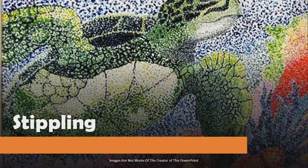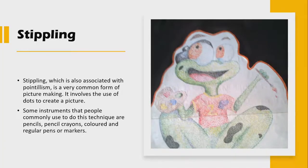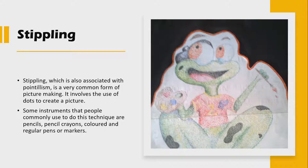We're going to kick things off with stippling. Stippling is basically a picture or image made using the element dot. Dots are compiled in a particular way to create form, texture, colors, and a real life image or design. Stippling is very often confused with pointillism because they are done in a similar format. However, the major difference is that pointillism uses paint, while stippling uses other writing utensils such as pencils, pencil crayons, colored markers, pens, or regular markers. Stippling is all about using those dry media instruments, and it is simply created when you put dots together to create an intentional design.